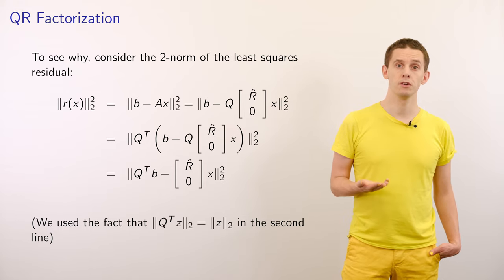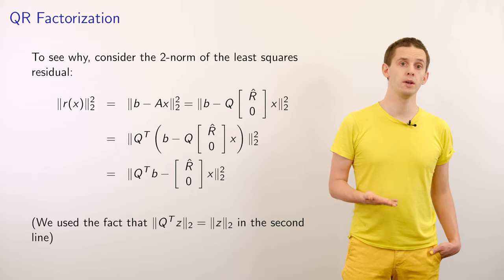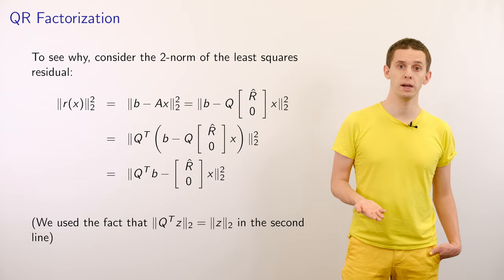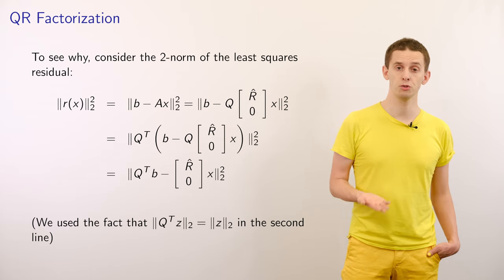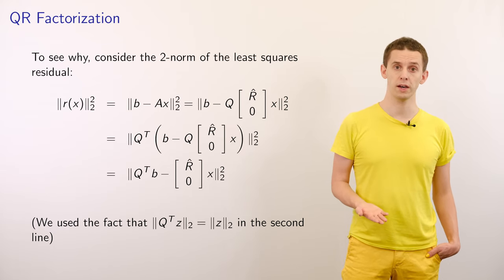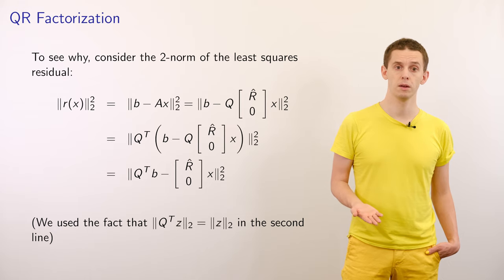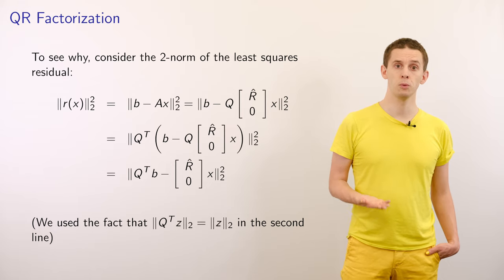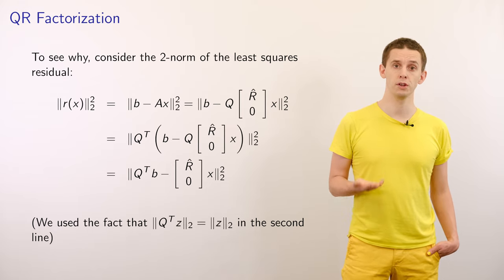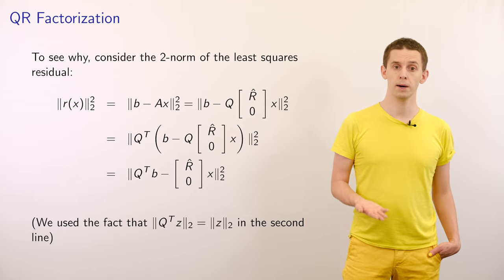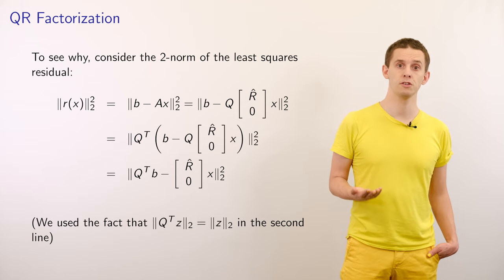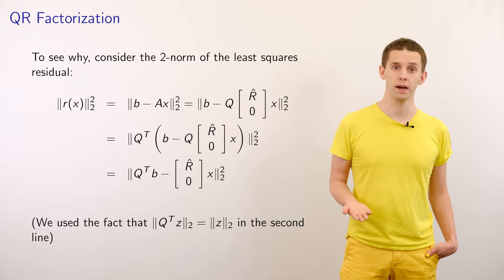Since Q is orthogonal, we know that we can pre-multiply the term in this norm by Q transpose, since this will not affect the size of the norm. We'll therefore end up with the 2 norm squared of Q transpose B minus our matrix with R hat and 0 applied to X.